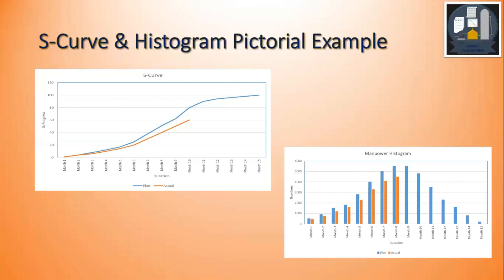On the right-hand side we have the manpower histogram. On the X-axis is the timeline in months, and on the Y-axis are the man hours. The blue represents the planned man hours from the baseline, and the orange represents the actual man hours spent. As we can see, the orange is less than the blue, meaning the actual man hours deployed are less than planned — and that may be the reason for the detailed engineering being behind schedule.